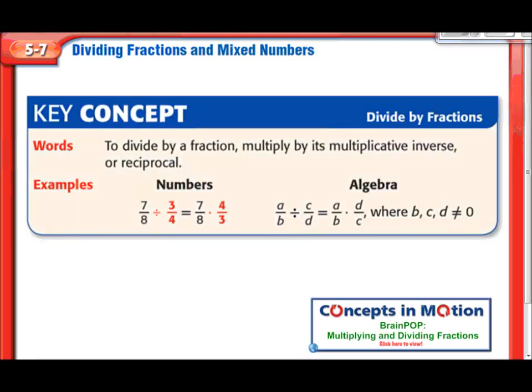Okay, to start things off, here's how we're going to divide by a fraction. We're going to multiply by the multiplicative inverse, or reciprocal. So in the case of 7-8ths divided by 3-4ths, we're going to turn that into 7-8ths times 4-3rds. Do you see what changed?